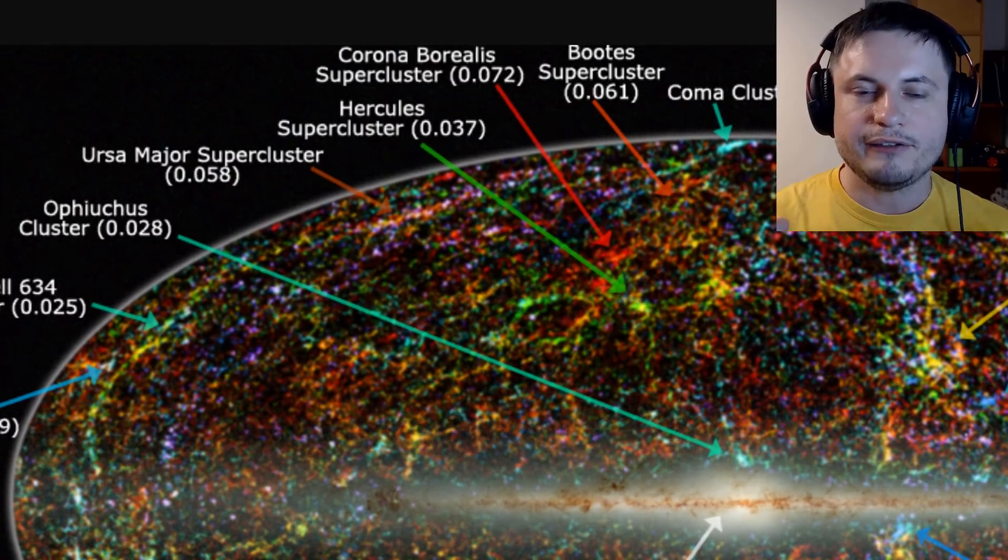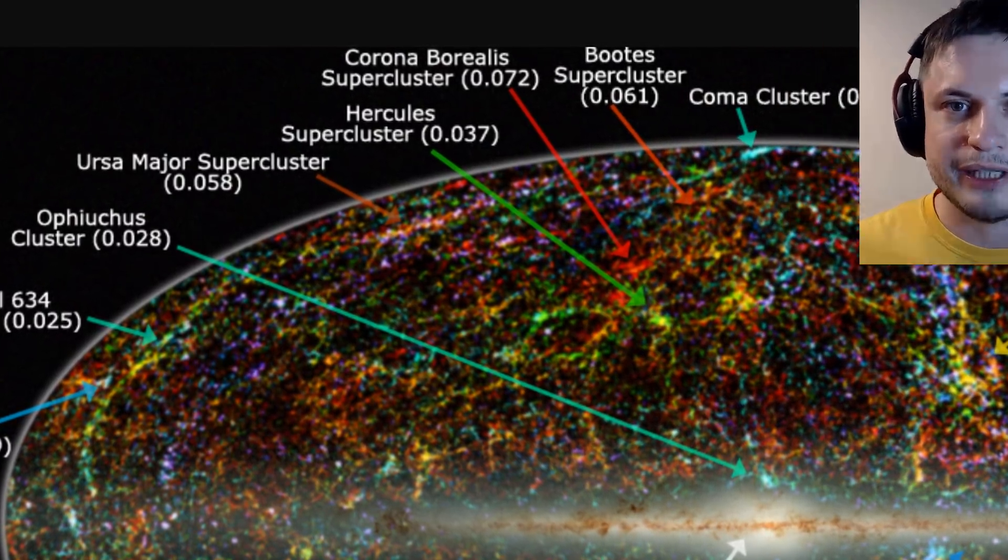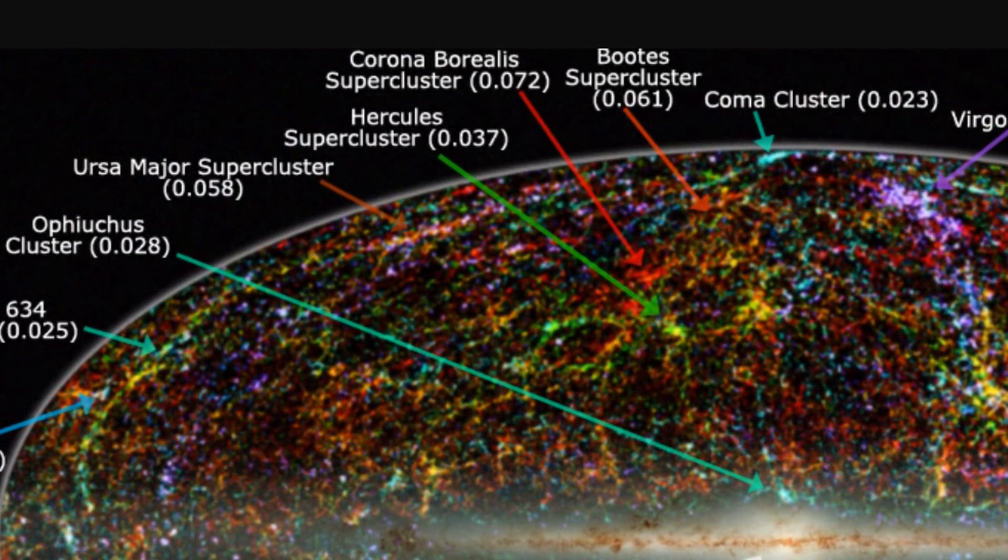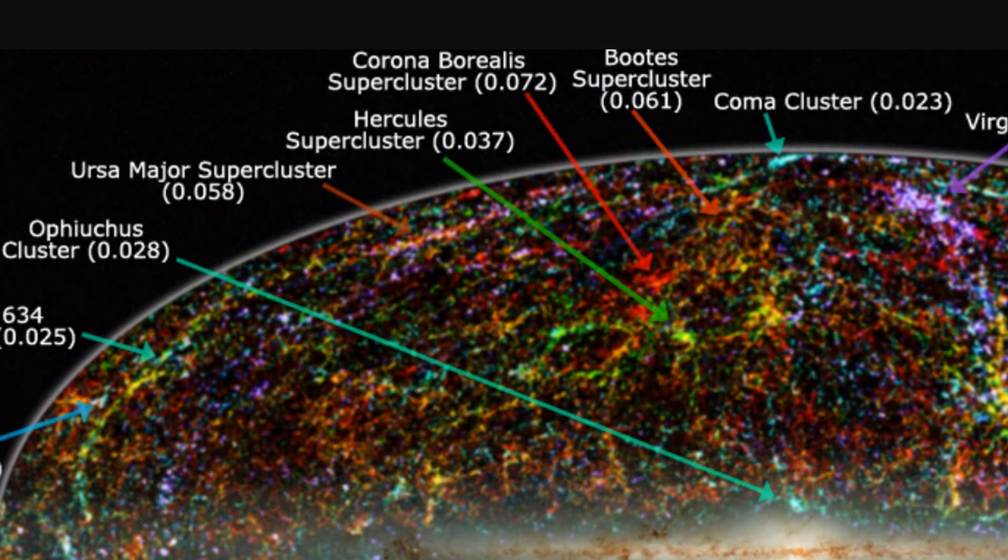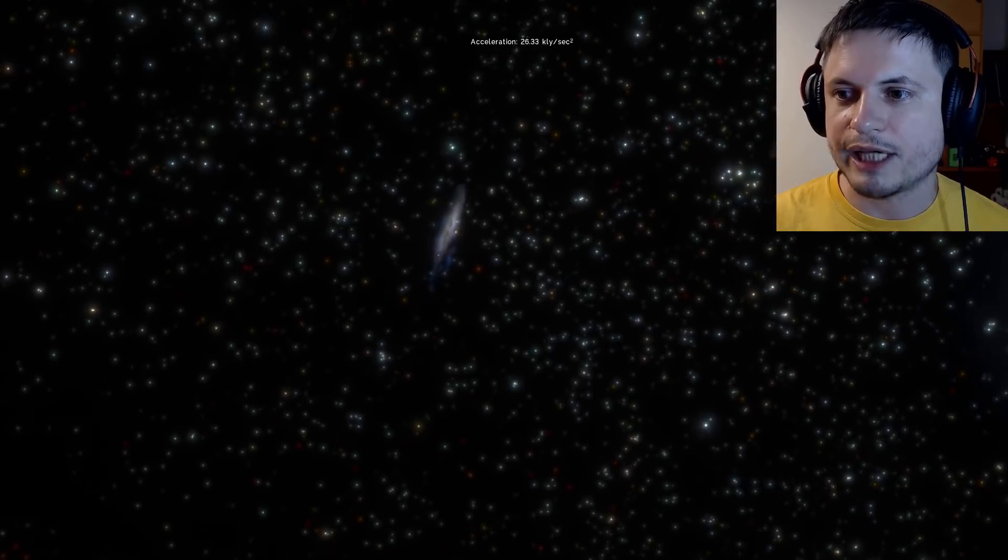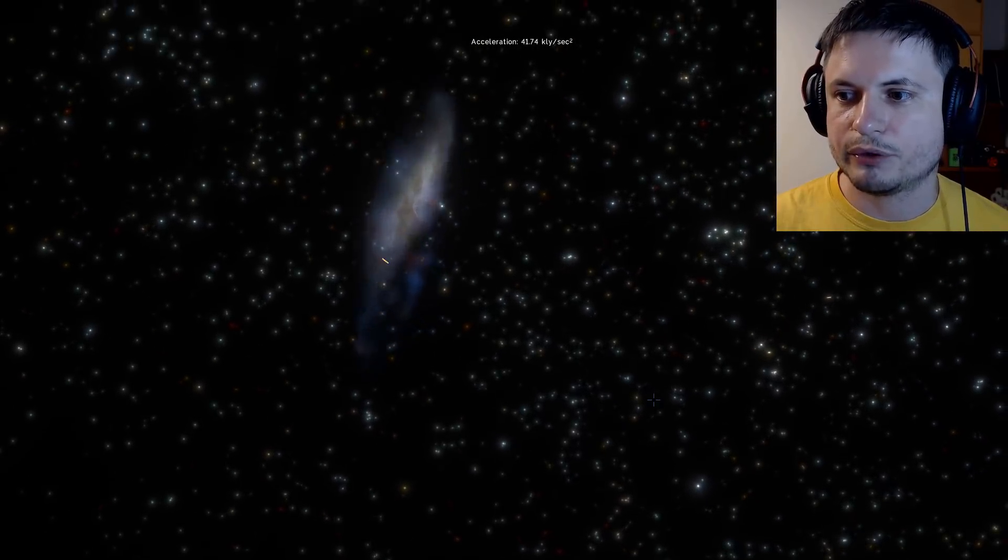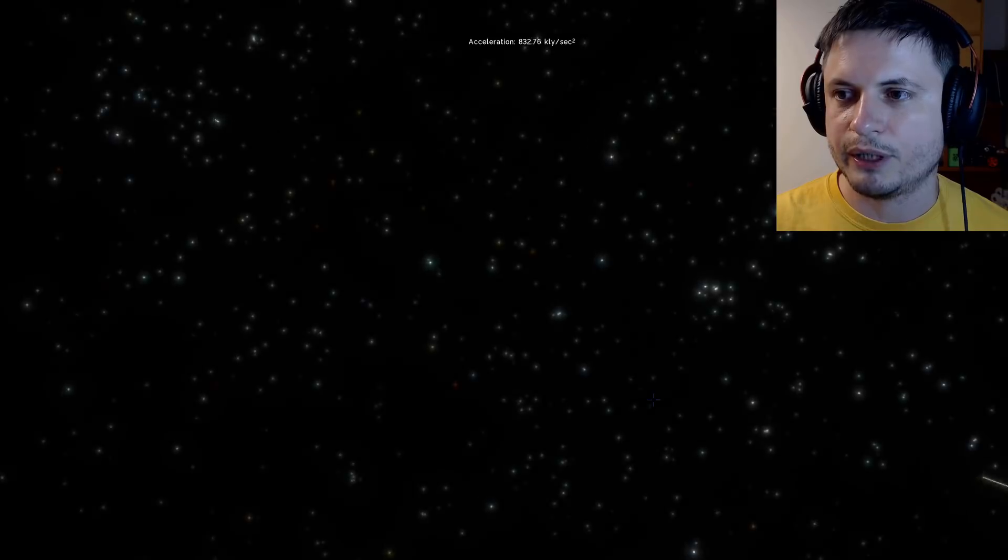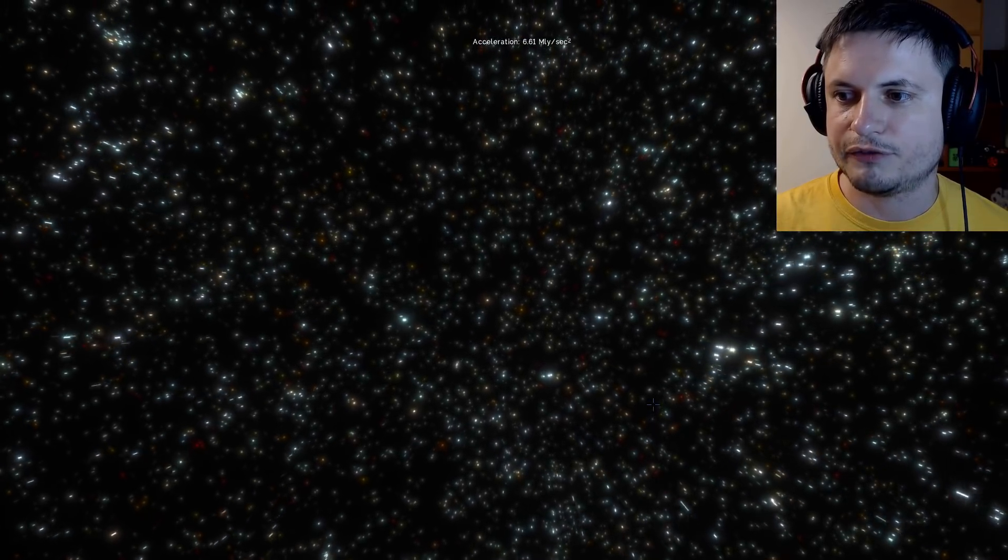So if you give something 13.8 billion years and just the gravity from normal matter, it will not have enough time to clump. The gravity is just not enough to create something as beautiful and as massive as, for example, this galaxy you see right there, or the galaxies we're going to be flying through in the next few seconds.